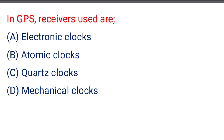Next question: in GPS, receivers used are — option A: electronic clocks, option B: atomic clocks, option C: quartz clocks, option D: mechanical clocks. The correct answer is option C: quartz clocks.